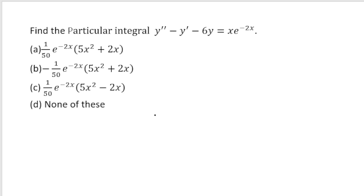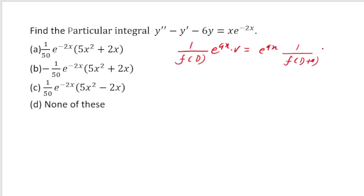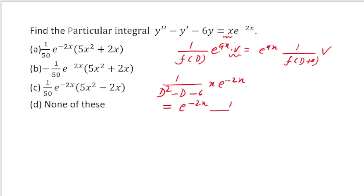Next question uses the formula: 1/f(D) · [e^(ax)·v] = e^(ax) · 1/f(D+a) · v. Here the right-hand side is xe^(-2x), so take e^(-2x) out and replace D by D-2. We get 1/[(D-2)²-(D-2)-6] operating on x.